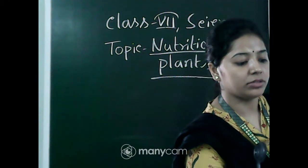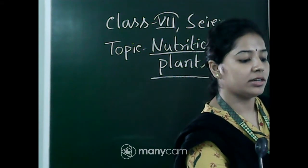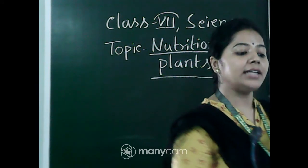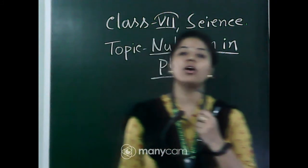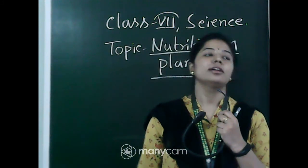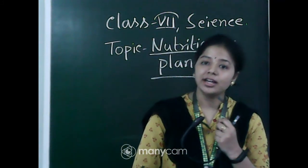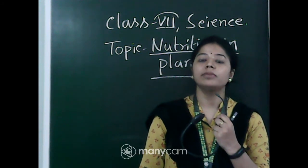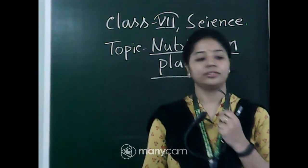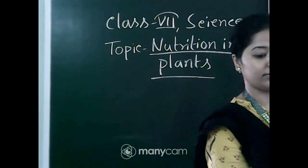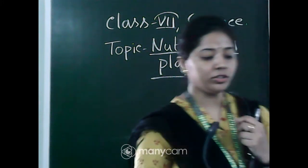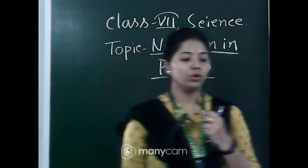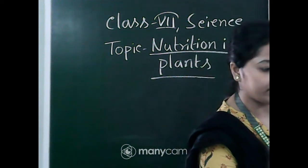Now the next question: Plants like Cuscuta — they take food from dash plant. The answer is host. Plants like Cuscuta take food from the host plant.